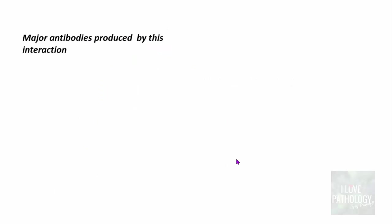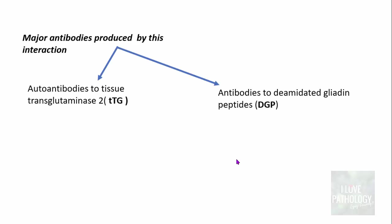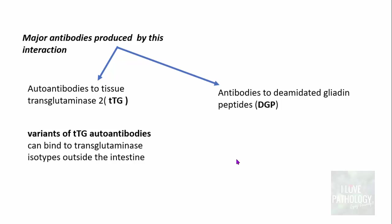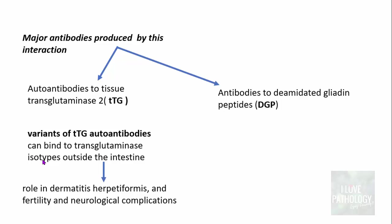The major autoantibodies produced are autoantibodies to tissue transglutaminase 2 and autoantibodies to deamidated gliadin peptides. Some variants of tissue transglutaminase antibodies can bind to transglutaminase isotypes outside the intestine, which is why these patients also manifest skin manifestations like dermatitis herpetiformis, as well as fertility issues and other neurological complications.